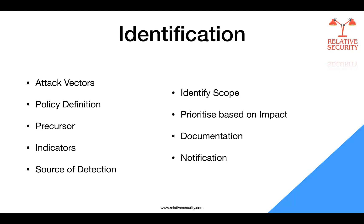Once you have identified the source of detection and analyzed and scoped the incident, the next step is to prioritize the handling of the incident — perhaps the most critical decision point in the incident handling process. Incidents should not be handled on a first-come, first-served basis due to resource limitations. Instead, handling should be prioritized based on relevant factors. The first factor is functional impact: incidents targeting IT systems typically impact the business functionality those systems provide, resulting in some type of negative impact to users.